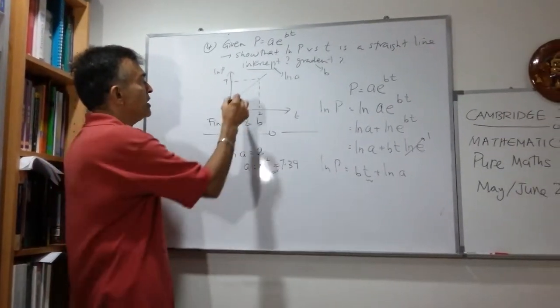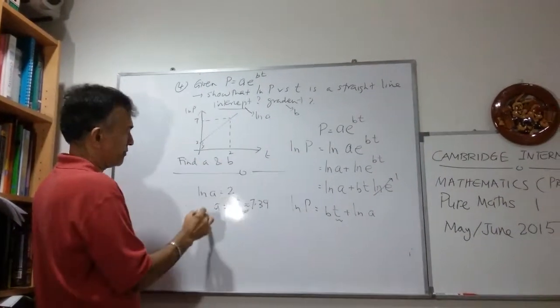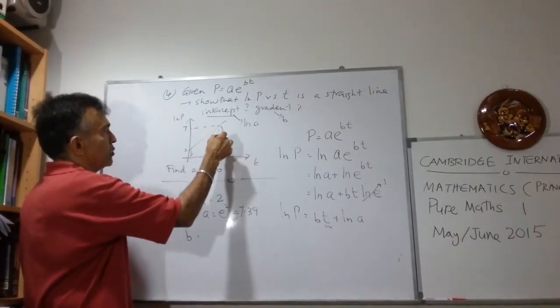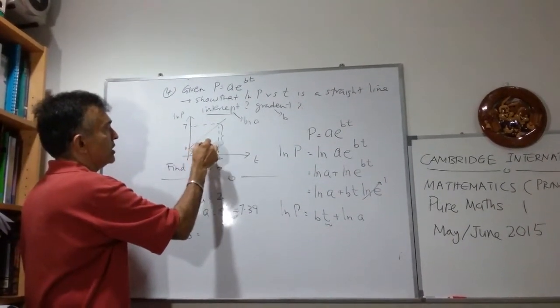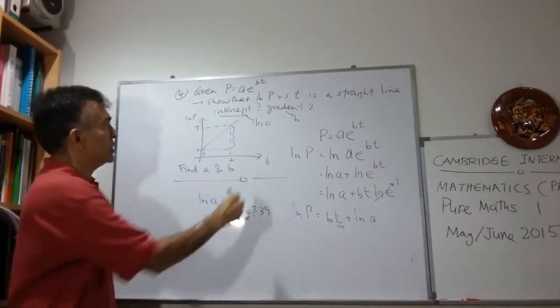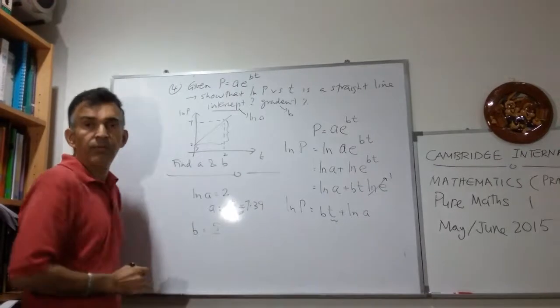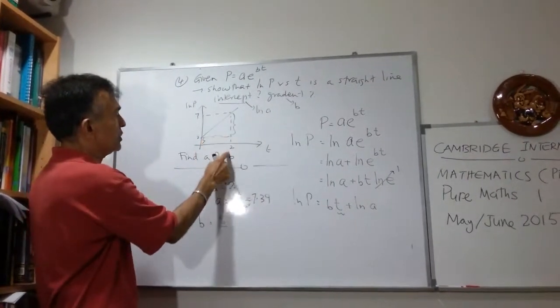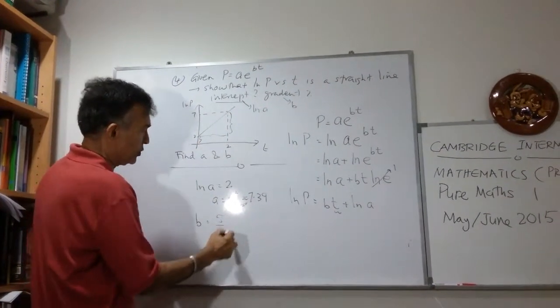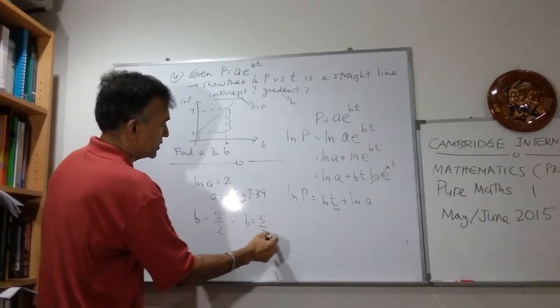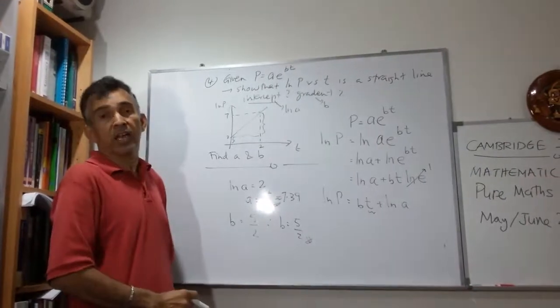And the gradient, we can easily do that. Gradient will be this one here over this one here. So watch this: 7 minus 2 is 5. And watch this: 2 minus 0 is 2. Therefore B equals to 5 over 2. And we are done.